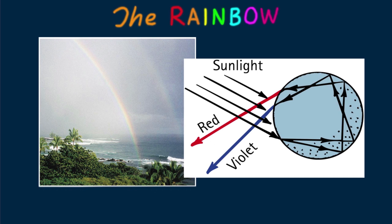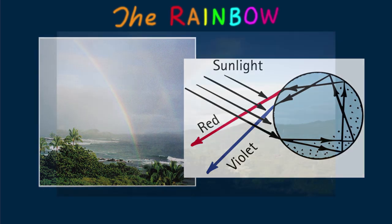Whether a single or double rainbow, your cone of vision that intersects the cloud of drops creating your rainbow is different from that of a person next to you. This is a rainbow as seen from my brother Steve's home in Costa Rica. If he says, "Look at the rainbow," you can reply, "Move aside so I can see it too." Everybody sees his or her own personal rainbow.